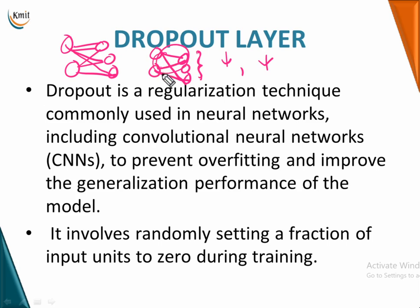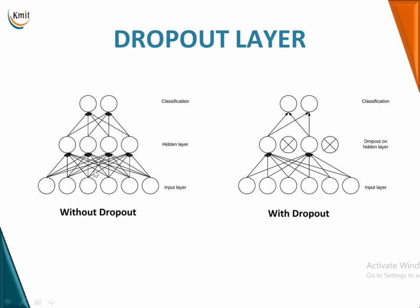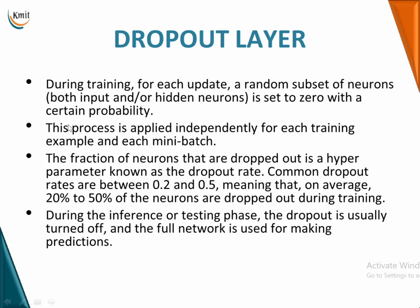Dropping out neurons reduces overfitting and increases generalization performance. Certain fractions of inputs are set to zero during training — not during testing. Without dropout, you have a fully connected layer; with dropout, the crossed-out neurons are the dropped neurons. This is how a dropout layer functions inside a CNN.